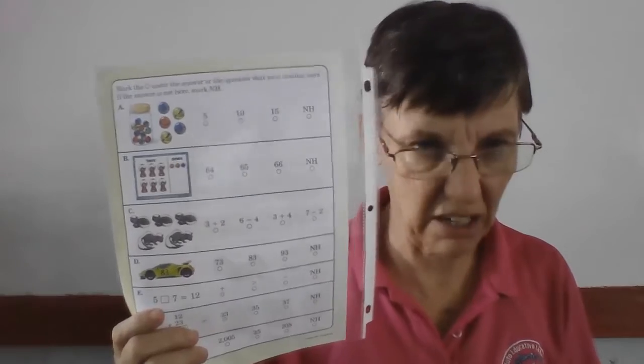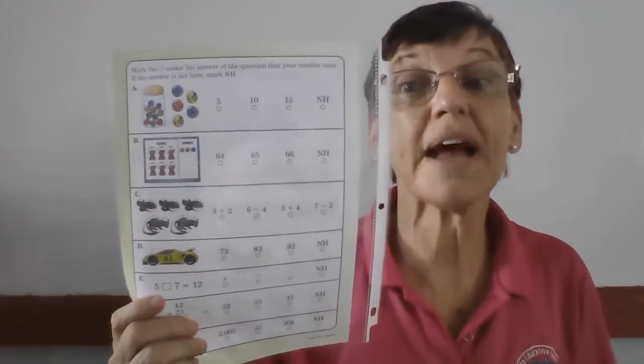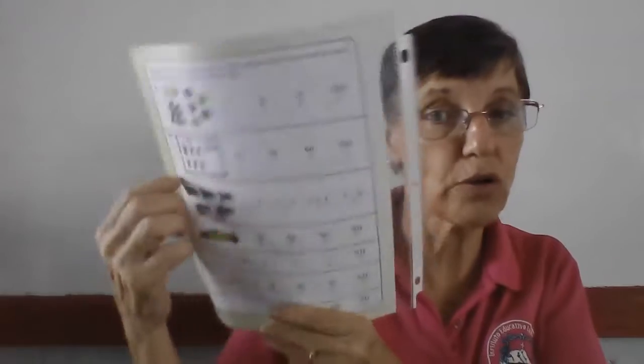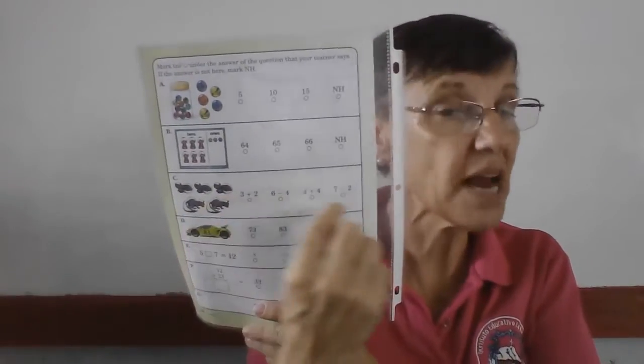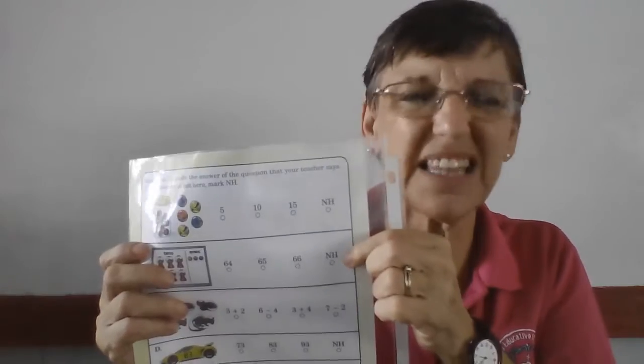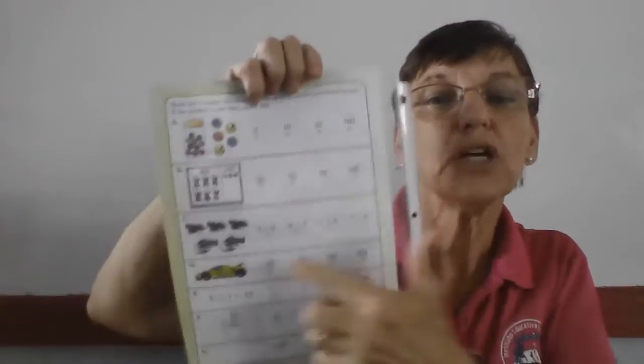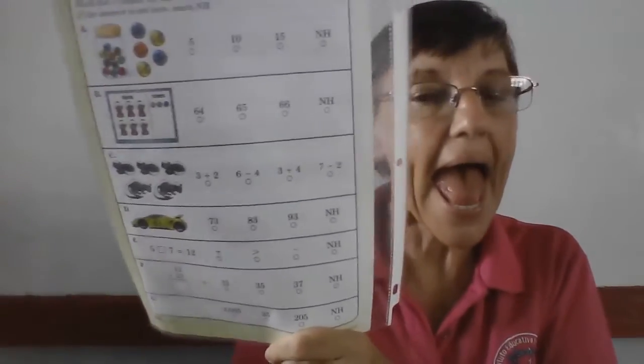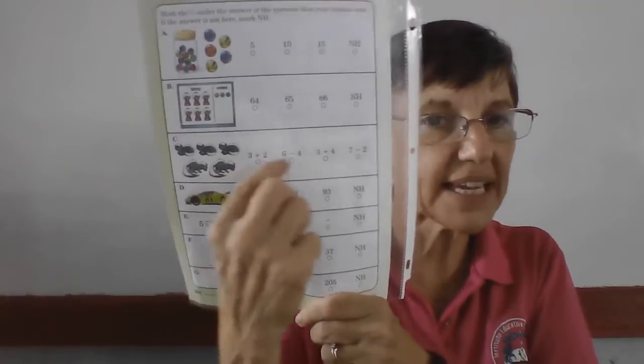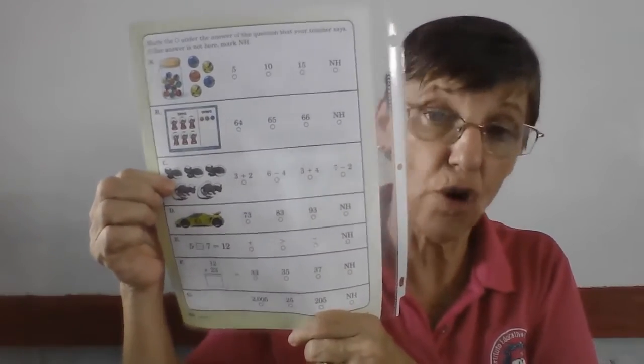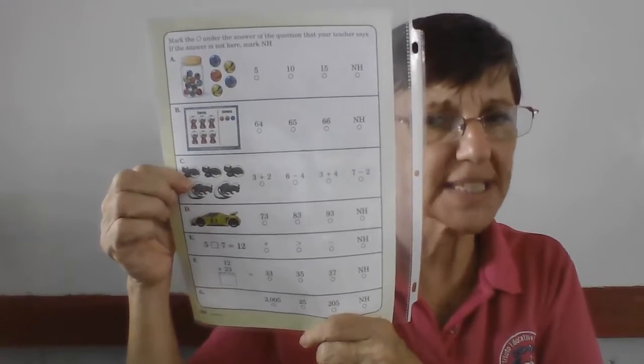Next we have some skunks — two rows, some up here, some down here. We have a number sentence. We have one, two, three, four number sentences. If you have NH, that means the answer is not here — they didn't give you the right answer. Which one of these tells us the number sentence that this goes with?